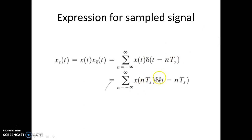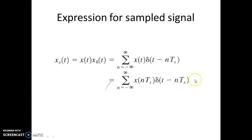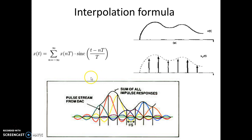Applying the property of an impulse: if you do the convolution of the sinc pulse with δ(t − nTs), you get that same sinc function displaced by nTs. The value x(nTs) is always a constant — as n takes on values from minus infinity to infinity, x(nTs) takes on different values, only integer values since it is discrete in time. So when you convolve the sinc pulse with the train of delta functions, you get the sinc pulse shifted to t − nTs. This gives the expression: x(nTs) · sinc((t − nTs) / T).